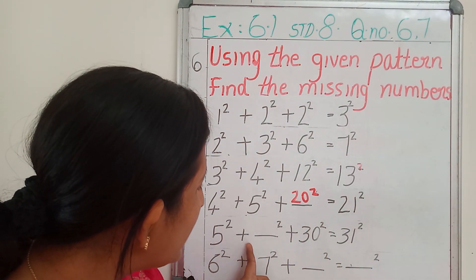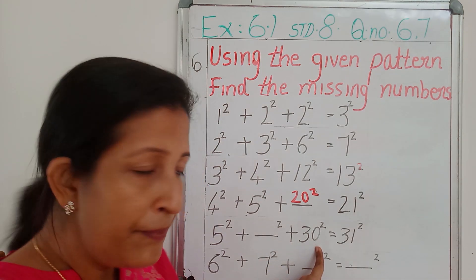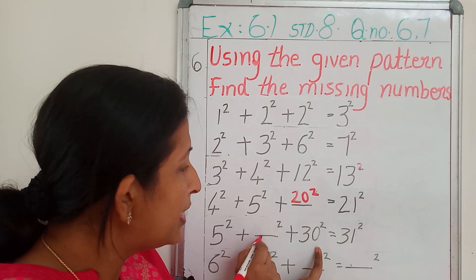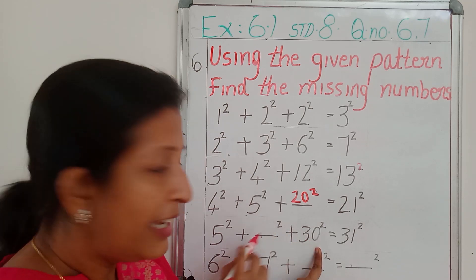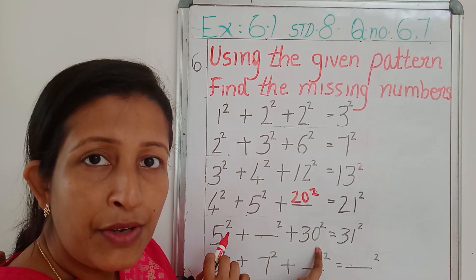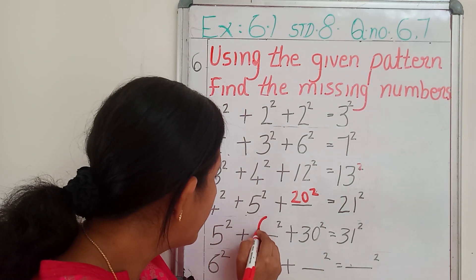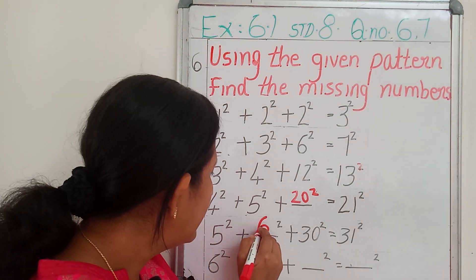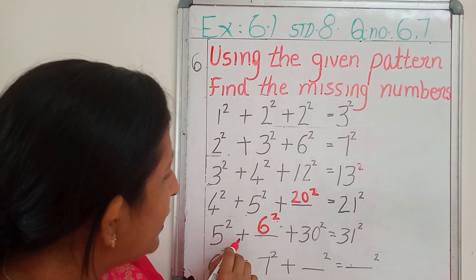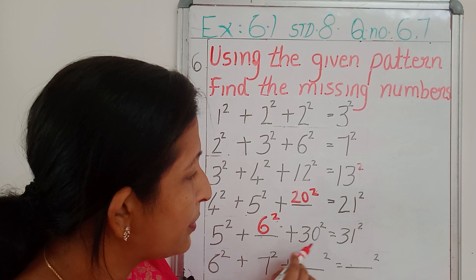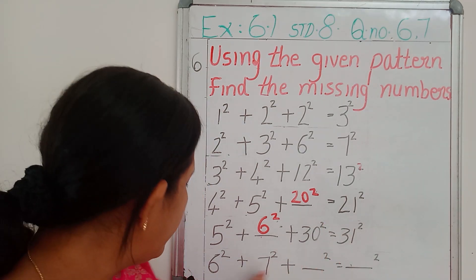Then, here: 5 square plus dash square equals 30 square. Multiplying these two numbers, we should get 30. Then what will be this dash? 5 into 6 is 30. So, 6 square. 5 square plus 6 square plus 30 square equals 31 square.